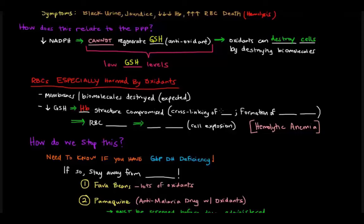And then what happens is we have the cross-linking of these hemoglobin molecules. And then we have the formation of these things called Heinz bodies on the red blood cells.